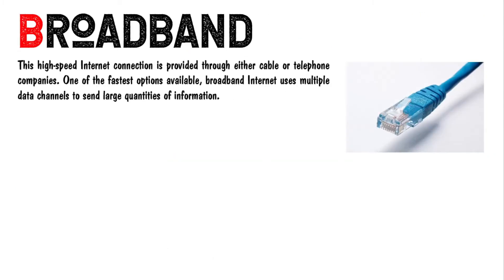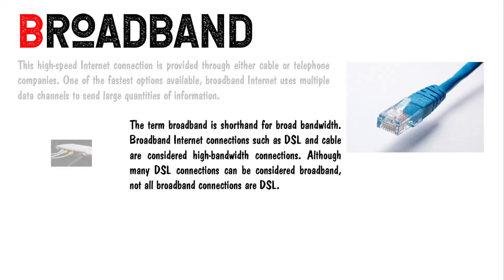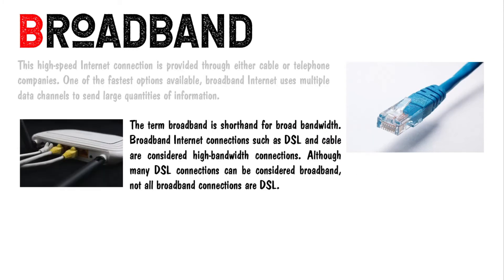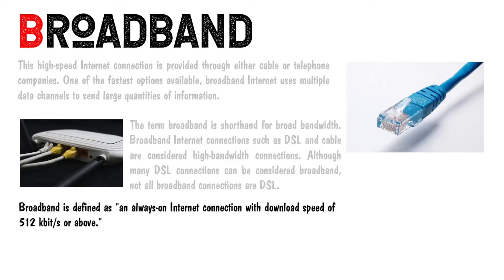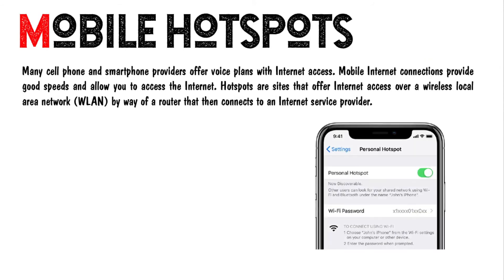Broadband is a high-speed internet connection provided through either cable or telephone companies. It is one of the fastest options available. Broadband internet uses multiple data channels to send large quantities of information. The term broadband is shorthand for broad bandwidth. Broadband internet connections such as DSL and cable are considered high bandwidth connections. Broadband is defined as an always-on internet connection with download speeds of 512 Kbps or above.